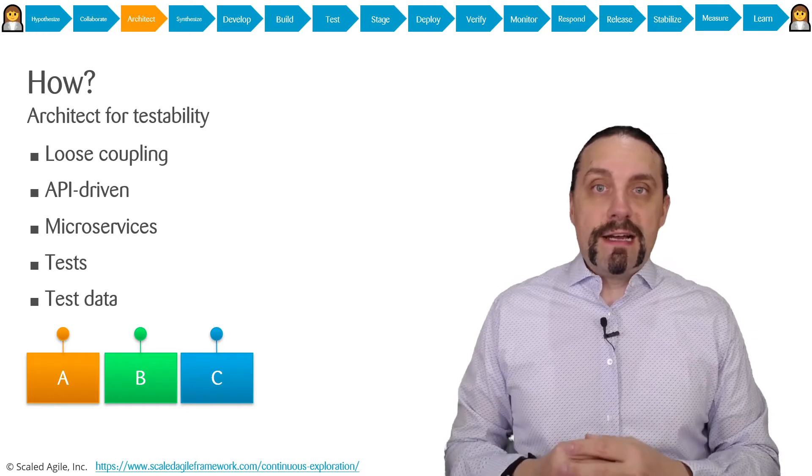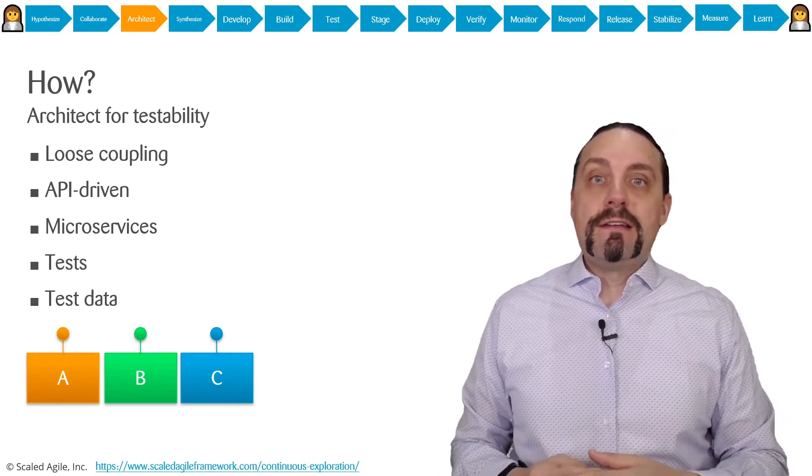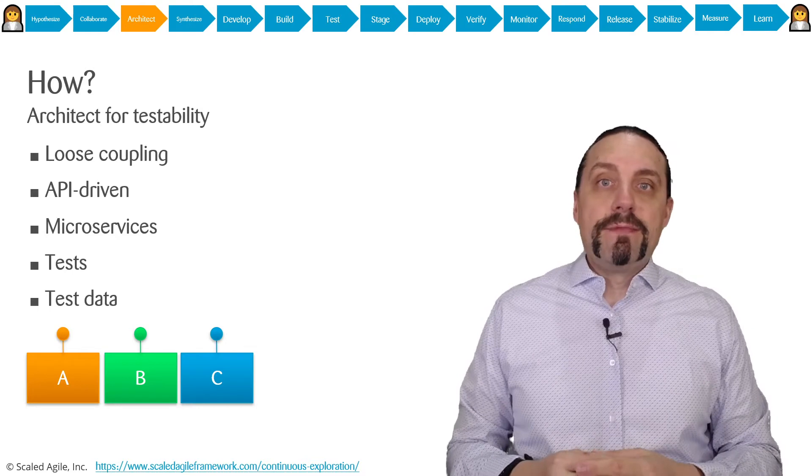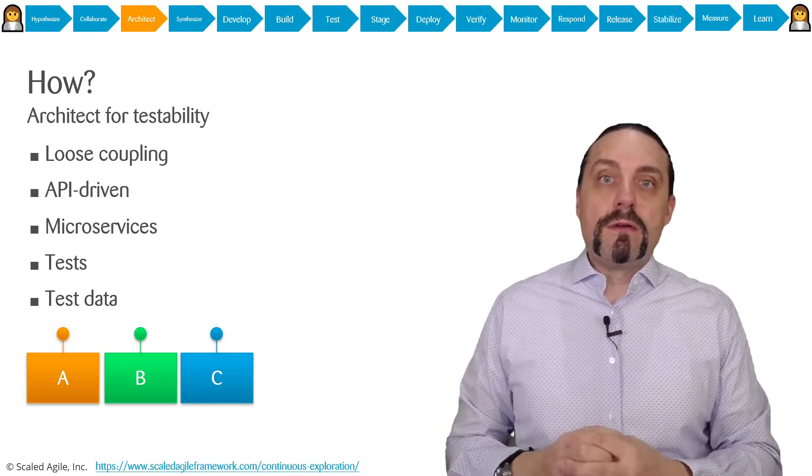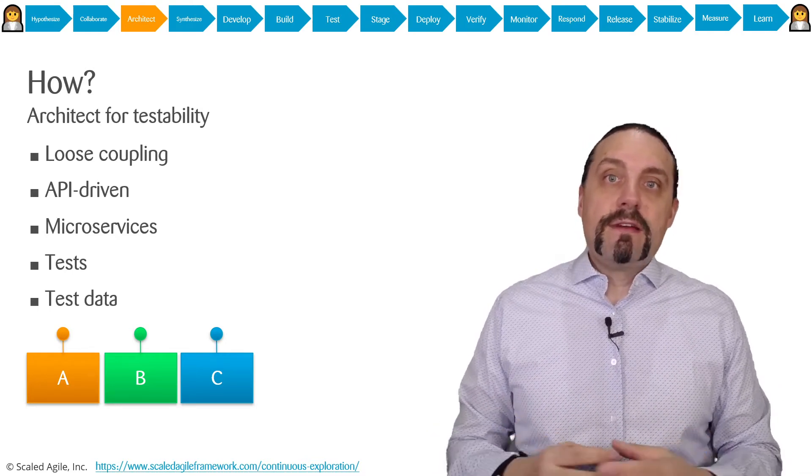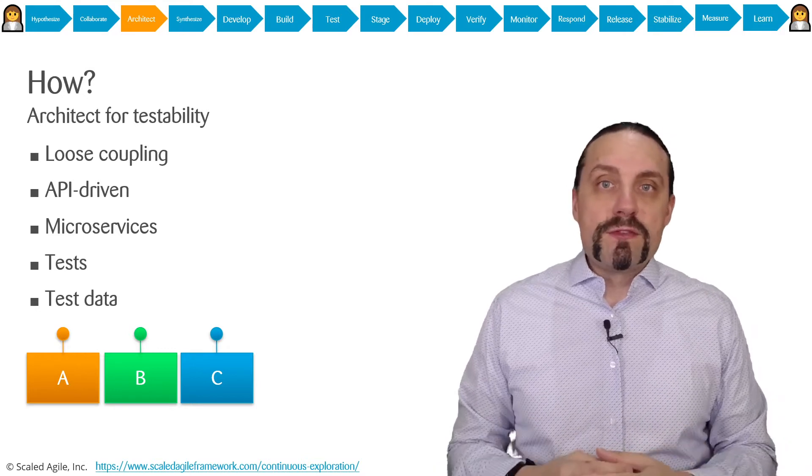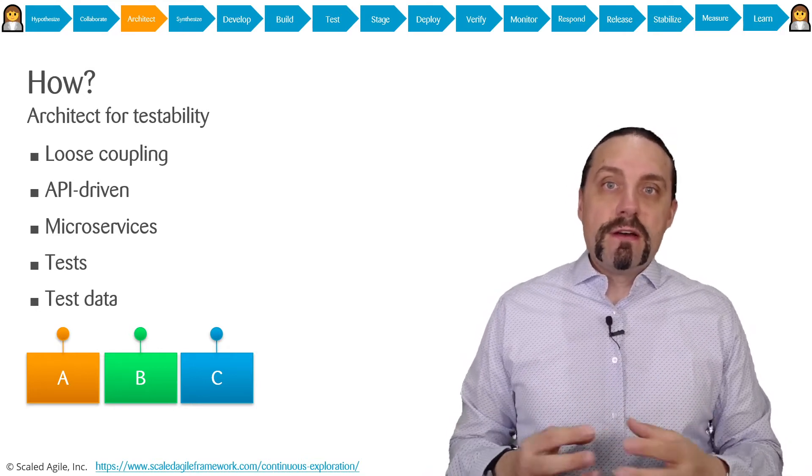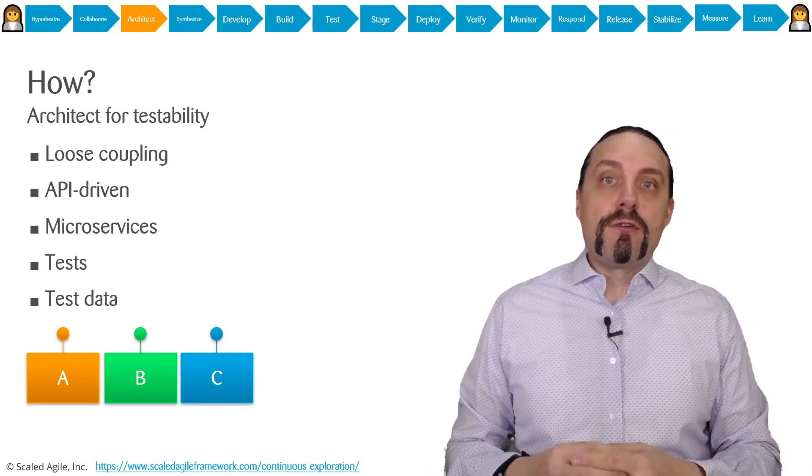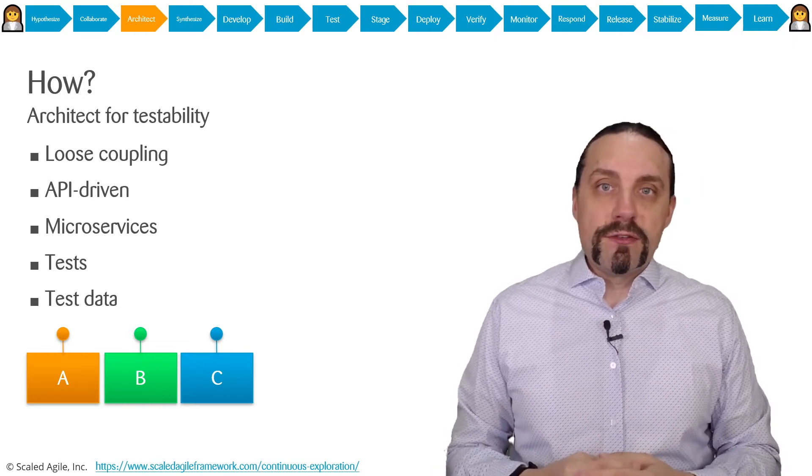An architectural style you can use is the microservice architectural style where you're building small microservices, and preferably you also use containerization so they run separated, each one in a container.